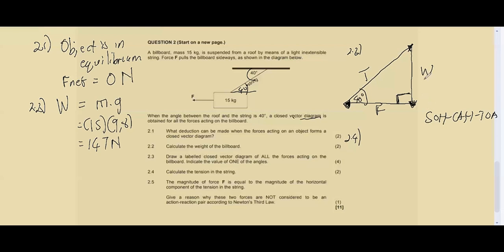In 2.2 we calculated the weight which is 147 newtons. Now we're looking for tension, which is our hypotenuse side, and W is 147, which is our opposite side to this angle. We have the opposite and hypotenuse, meaning sine can work here. That means sine 40 degrees equals 147 over the tension. To find T, we go 147 over sine 40 degrees, which gives you 228.69 newtons.